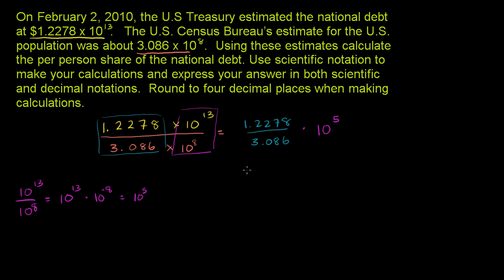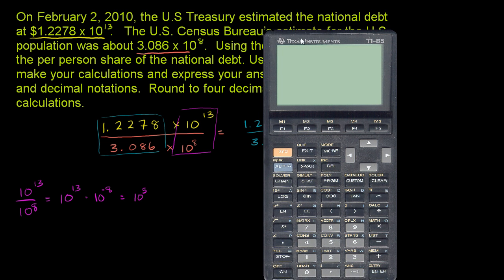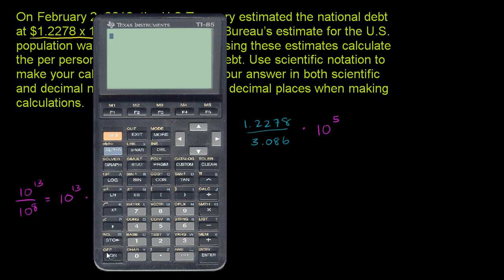And let's get a calculator out to calculate this right here. Let's get the calculator out. And they say round everything to 4 decimal places, so I'll keep that in mind. Let me turn my calculator on. 1.2278 divided by 3.086 is equal to 3, let's see, how many? 3, 9, 7, 9.